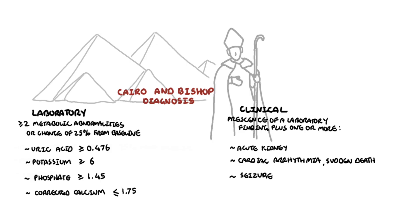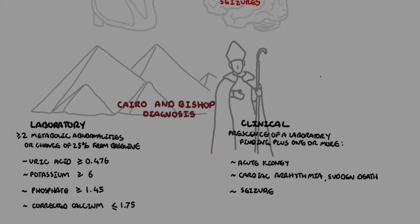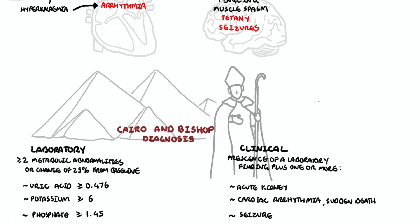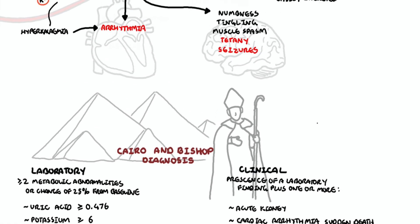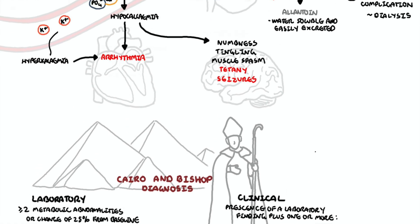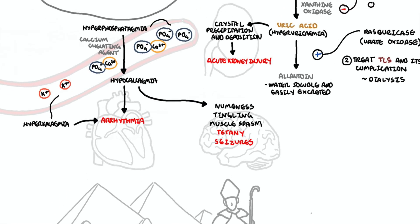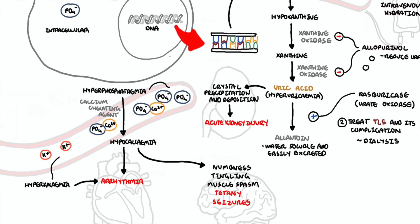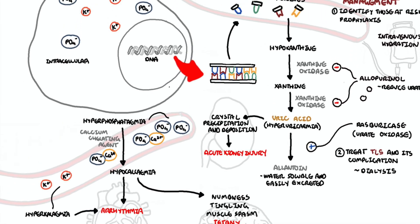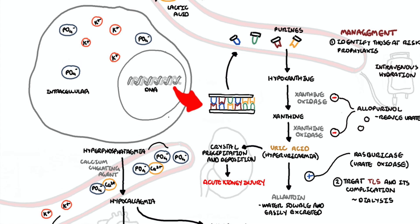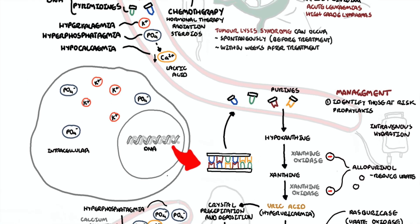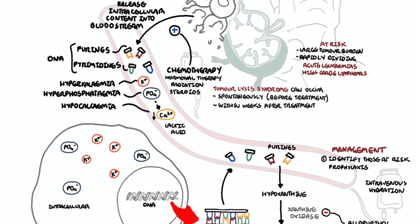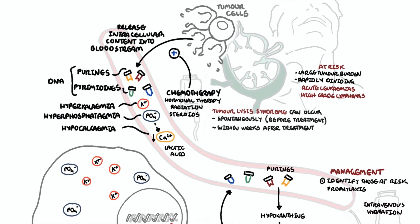In summary, tumor lysis syndrome is a condition whereby the intracellular components are released into the bloodstream, resulting in hyperkalemia, increase in uric acid levels, hyperphosphatemia, and hypocalcemia.